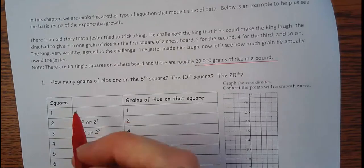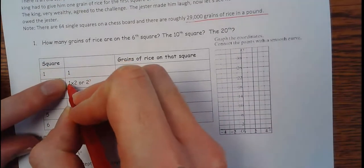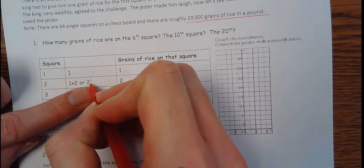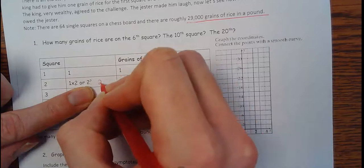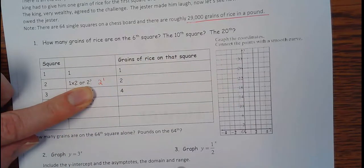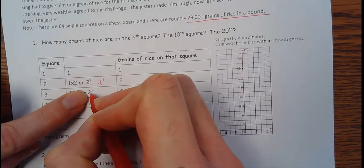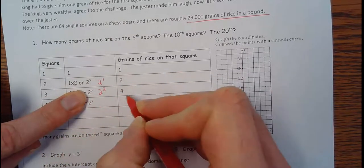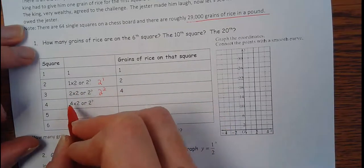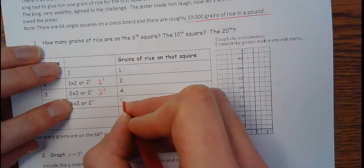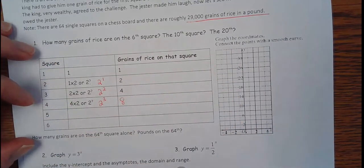In the first square, there was one. And in the next square, there's one times two, or two. That would be two to the first power. And then the next square would be two times two, which would be two squared, or four grains of rice. The next one is four times two, is going to be eight, which is the same thing as two cubed. Hopefully you're kind of seeing a pattern here.